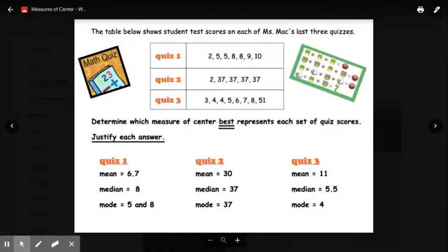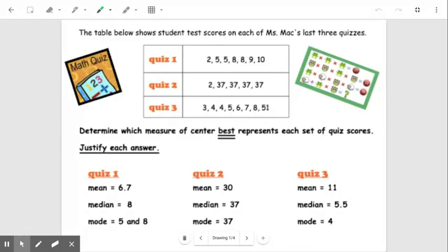Alrighty. So if we take a look at this example, it says the table below shows student test scores on each of Ms. Mack's last three quizzes. So quiz one, quiz two and quiz three.